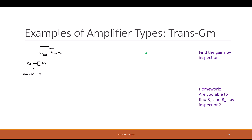Let's go to another type of amplifier: transconductance. I call this transconductance because the input is voltage and the output is current.